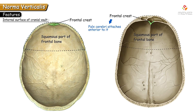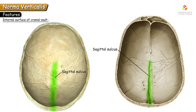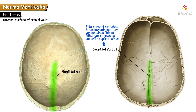Along the sagittal suture there is a shallow groove termed the sagittal sulcus. The lips of the sagittal sulcus give attachment to the falx cerebri. Within this fold of dura mater there is a dural venous sinus — a blood-filled gap between the two layers of dura mater. The dural venous sinus lodged in the sagittal sulcus is the superior sagittal sinus.